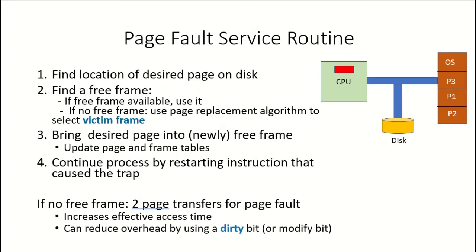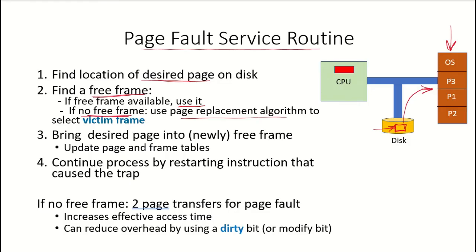Considering the page fault service routine — how the page fault will be handled — first we find the location of the desired page on the disk, identifying the specific track and sector. Once that location is available, we need to find a free frame in main memory. If a free frame is available, we use it and bring the page into main memory. But if there is no free frame, a page replacement algorithm must be used to select a victim frame.